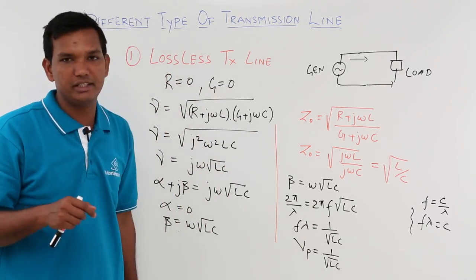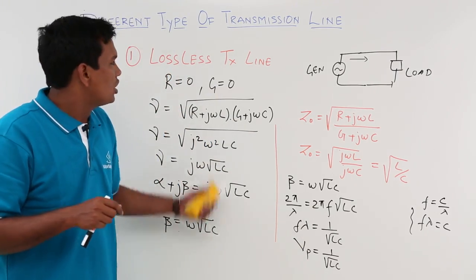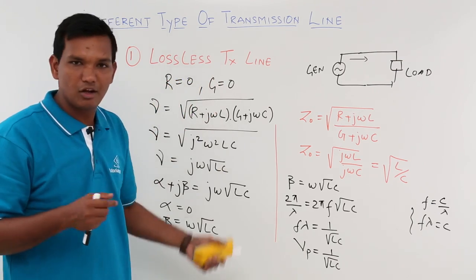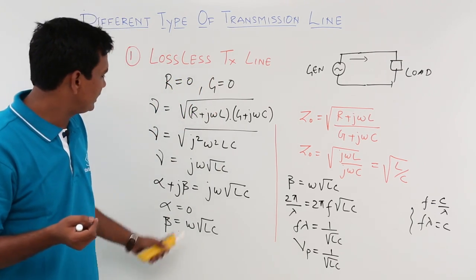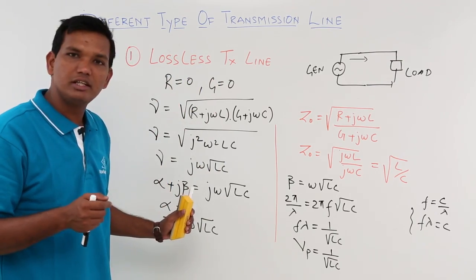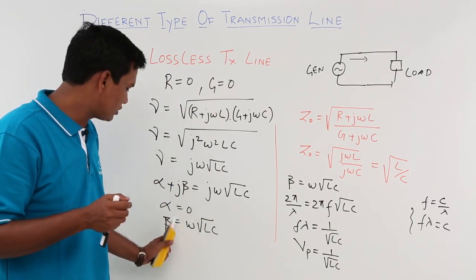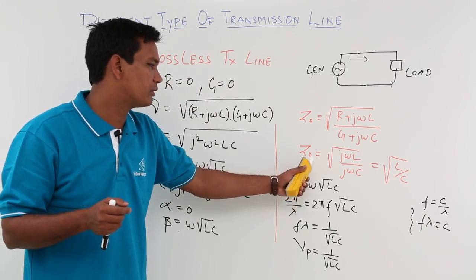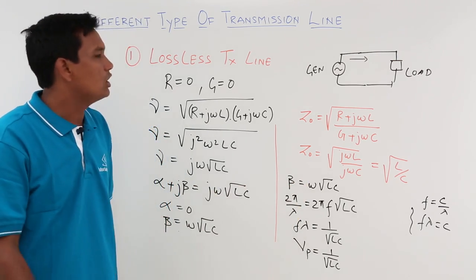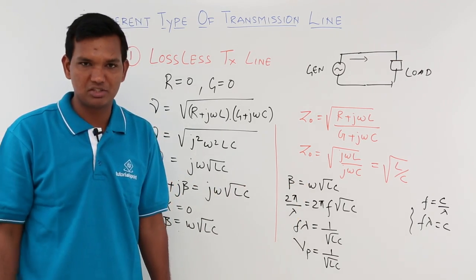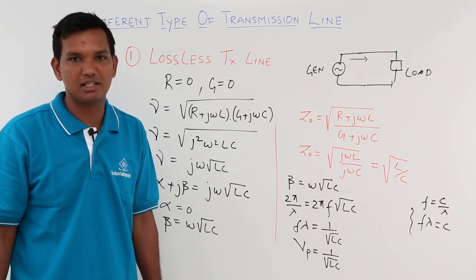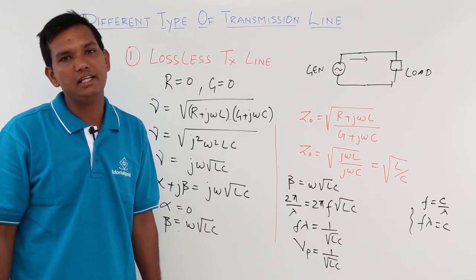So the conclusion is: the first transmission line we studied is the lossless transmission line. We derived the propagation constant in terms of alpha and beta, and determined the characteristic impedance for a lossless transmission line. We will see other types of transmission lines in the next videos.